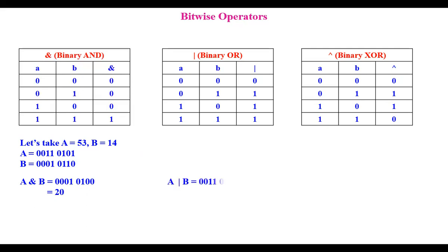Next, let us see the OR operation. A and B values are taken. Following the OR truth table: 1 OR 0 results in 1; 0 OR 1 results in 1; 1 OR 1 results in 1; 0 OR 0 results in 0; 1 OR 1 is 1; 1 OR 0 results in 1; 0 OR 0 and 0 OR 0 both result in 0. So A OR B results in this value. When converted to decimal, you get 55.